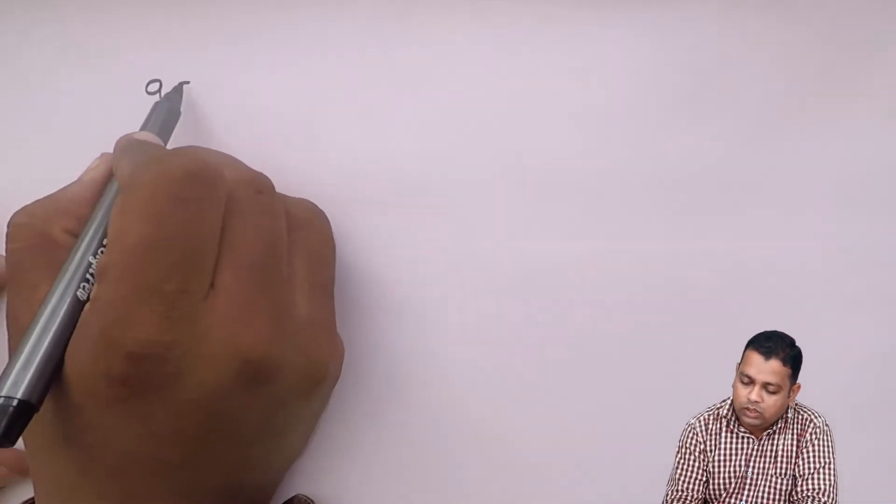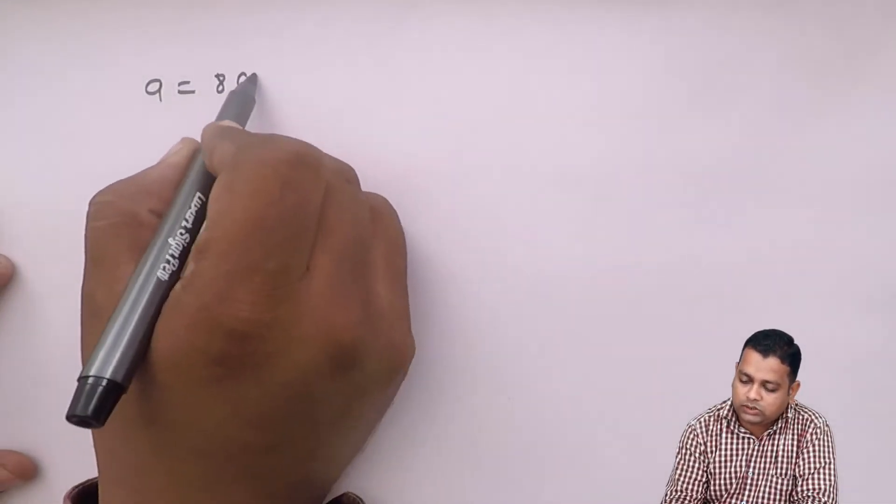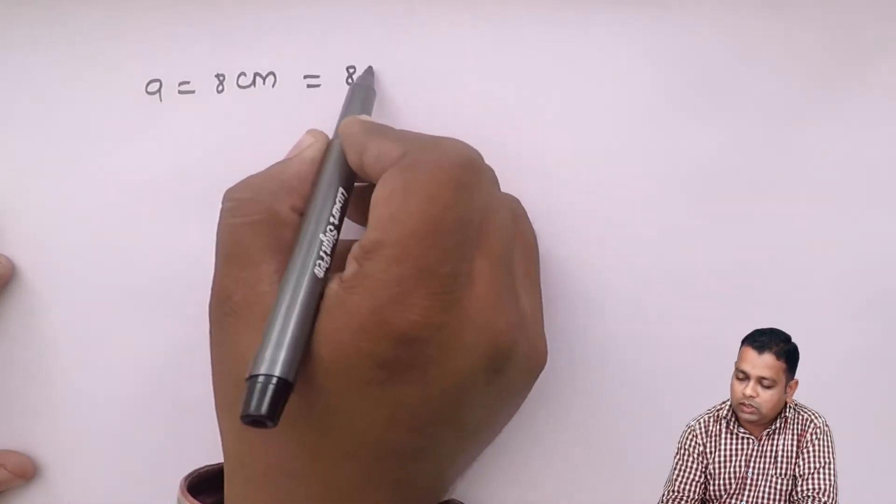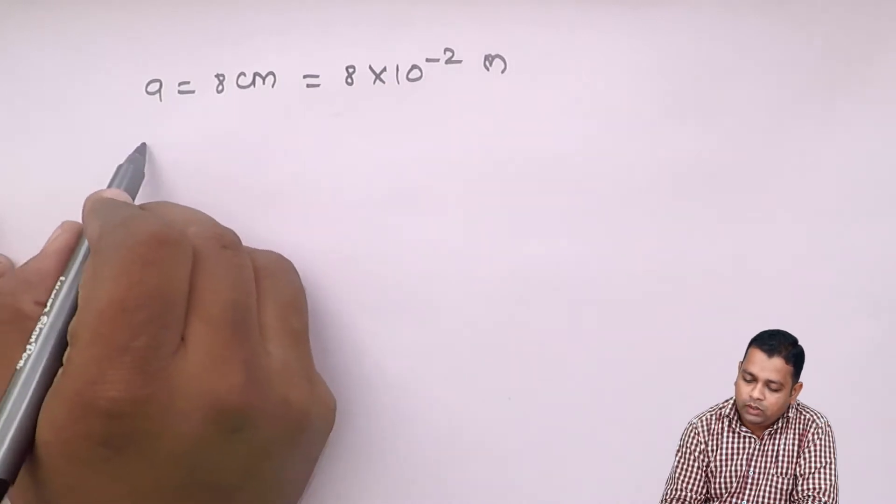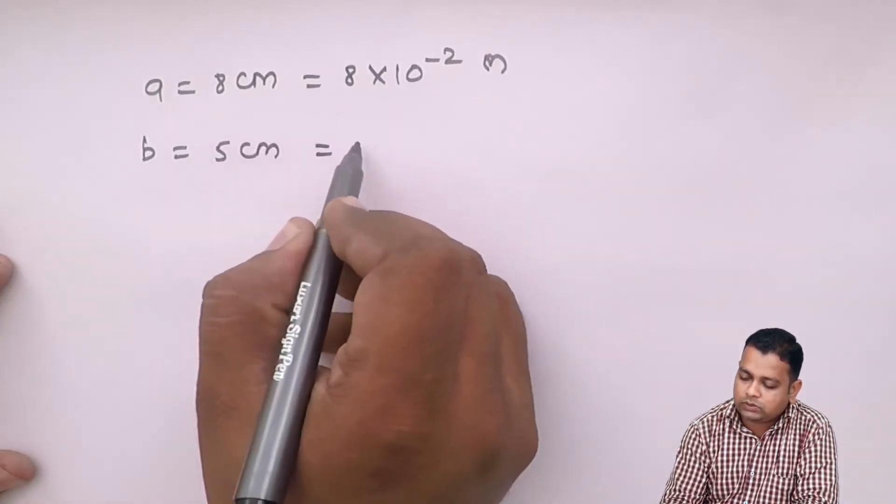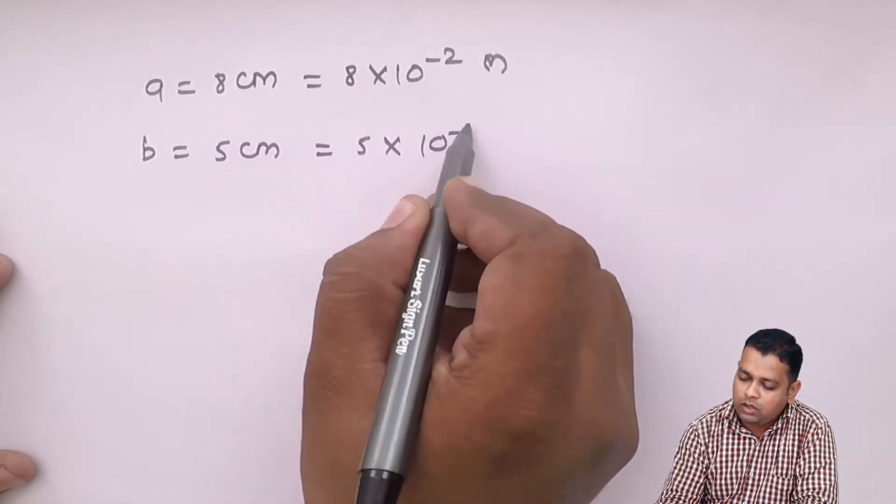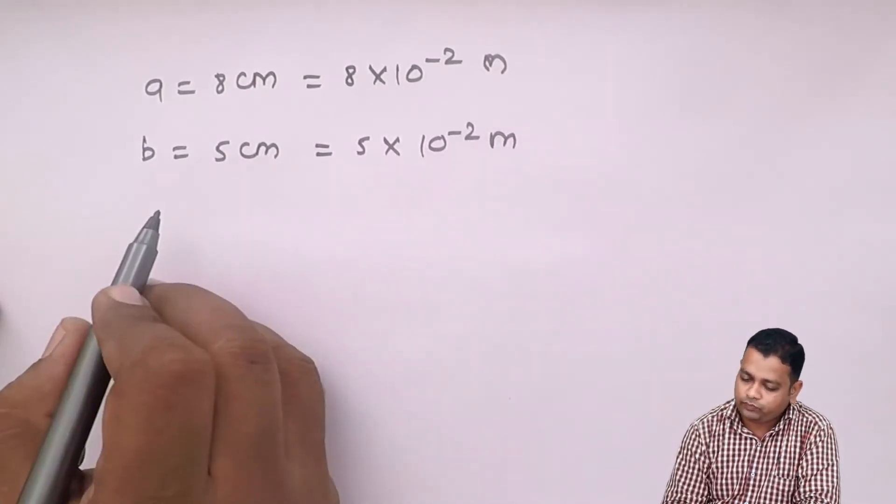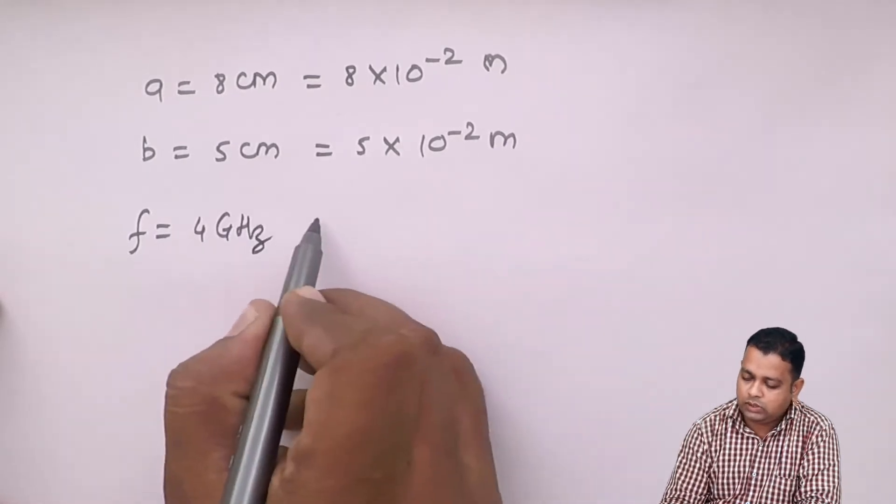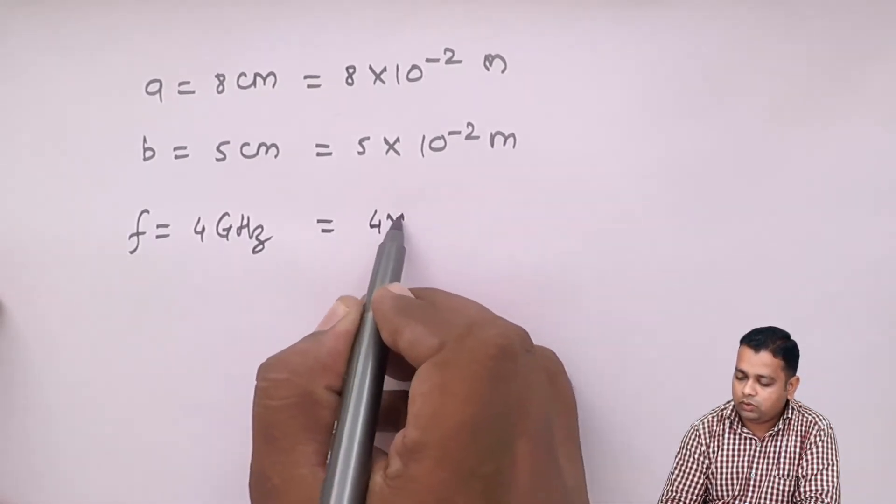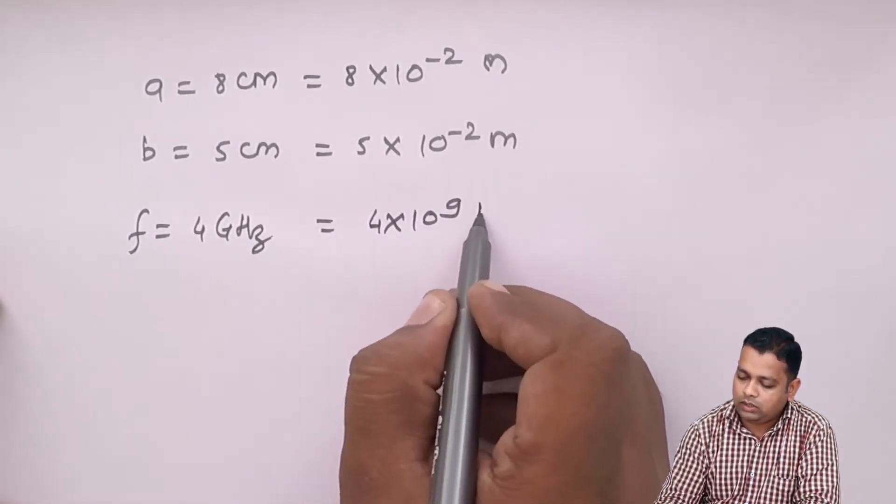In problem number 4, we first of all take down the given data. A will be equal to 8 centimeter, that is 8 into 10 raised to power minus 2 meters. B will be equal to 5 centimeter, that is 5 into 10 raised to power minus 2 meters. F will be equal to 4 gigahertz, that is 4 into 10 raised to power 9 hertz.